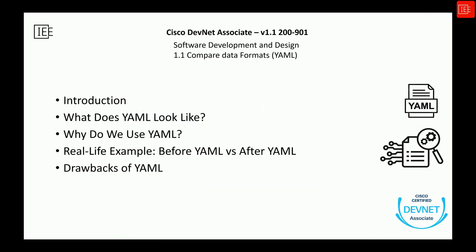Hi everyone. Over the last couple of videos we took a deep dive into XML and JSON, two key data formats you absolutely need to know if you are working in software development or network automation. Today we are building on that foundation by taking a closer look at YAML, another really important data format you are likely to use a lot, especially if you're working with tools like Ansible or cloud platforms. We will walk through what YAML looks like, how it's different from XML and JSON, and why it's often the go-to choice for so many automation tasks.